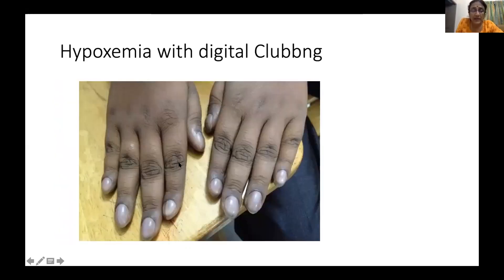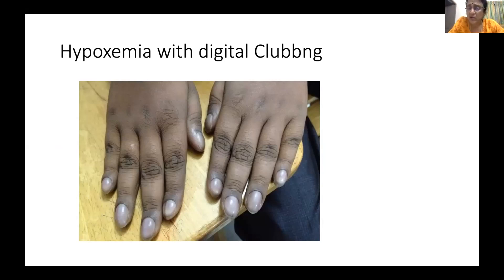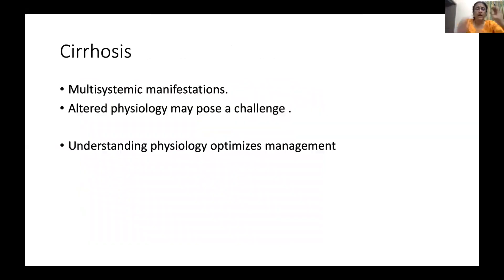Hepatopulmonary syndrome involves bypassing pulmonary arteriovenous channels. A case was presented of an older child with cyanosis and room air saturation of 78% and PAO2 of about 45 mmHg who underwent successful liver transplant. In summary, the commonest pathological alteration in liver physiology is cirrhosis, with multi-systemic manifestations. Understanding basic physiology helps to optimize management of these altered states.